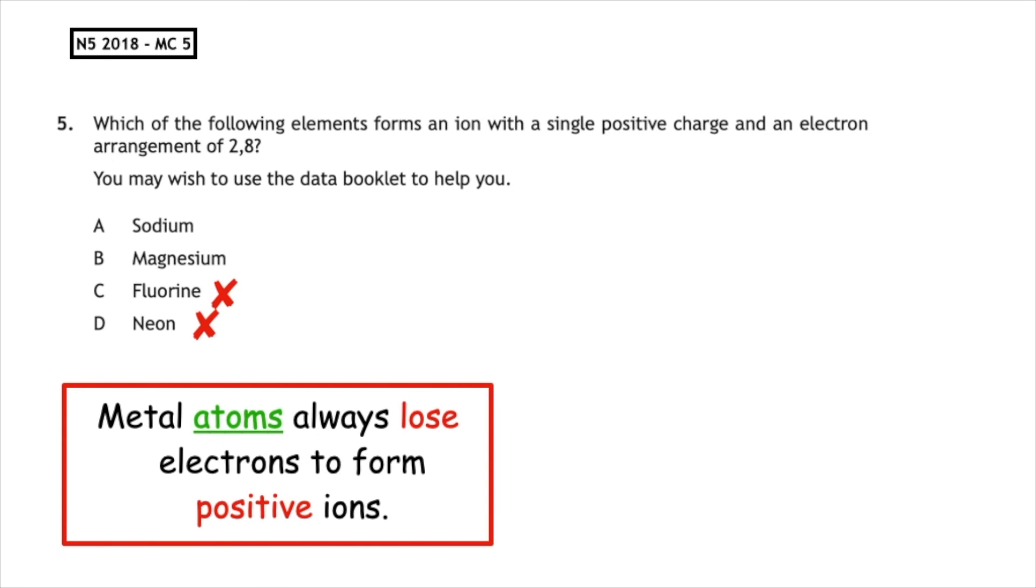If we then write the electron arrangement for sodium and magnesium, what we can see is that they have the same number of shells, except sodium has one outer electron and magnesium has two. That means that the correct answer is going to be sodium, because that will lose a single outer electron.